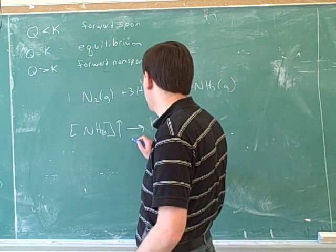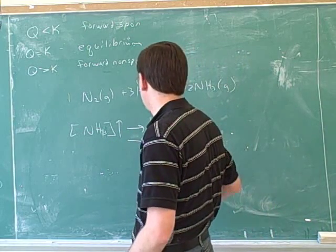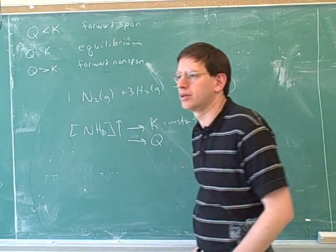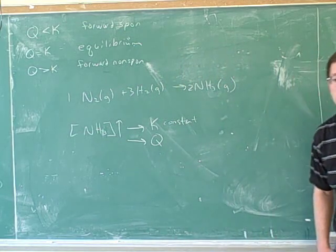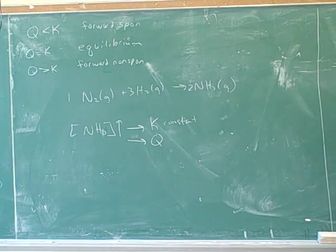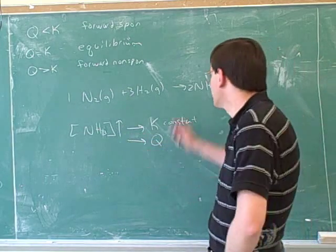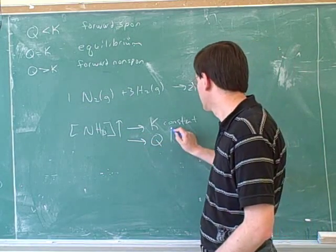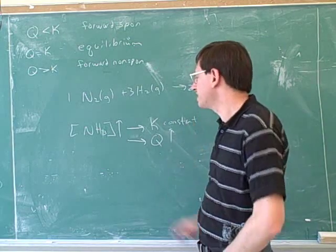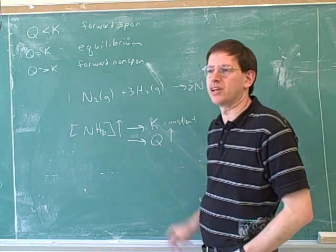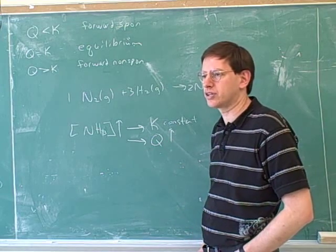Now, if you do increase ammonia, what would that do to Q? It will make Q greater. Then we get more products, and the products are in the numerator. So Q would go up. So it does have an effect, but it has the effect on Q, not on K, because it's Q that's based on the actual concentrations.